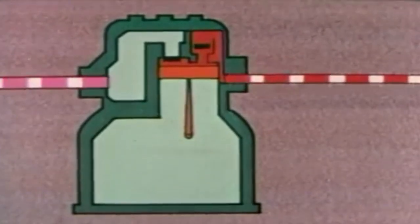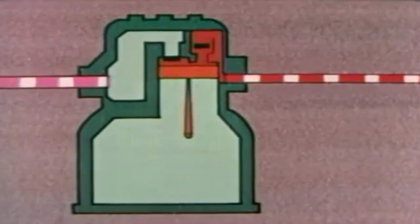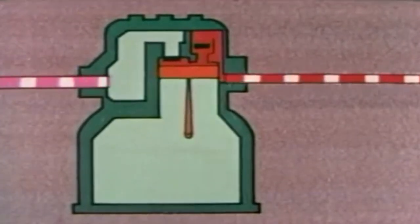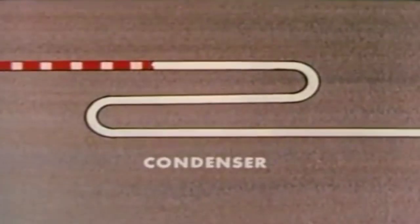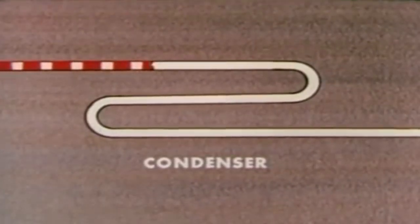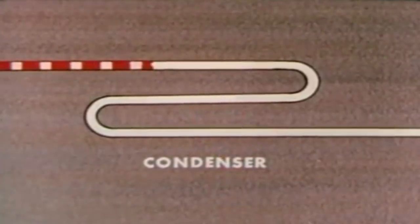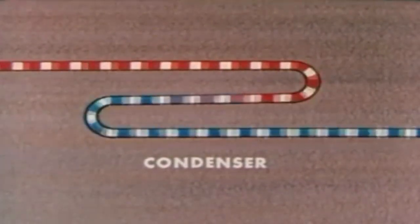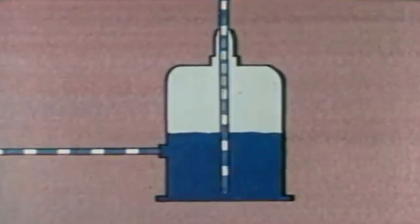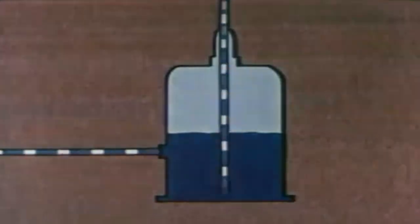Remember what happens when gas is compressed? Pressure goes up, temperature goes up. The gas, now at high pressure and high temperature, flows into the condenser. The gas is hot — hotter than the surrounding air — so it gives up heat to the air. As the refrigerant loses heat, it starts changing back into a liquid. To complete the cycle, the liquid refrigerant returns to the receiver.